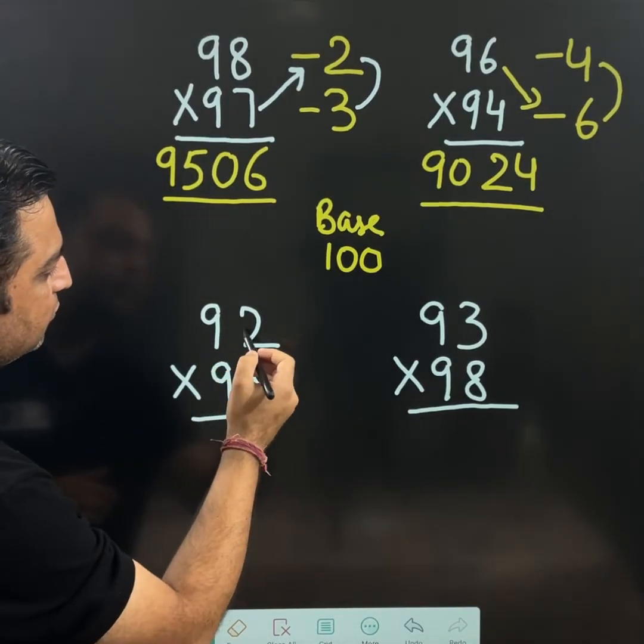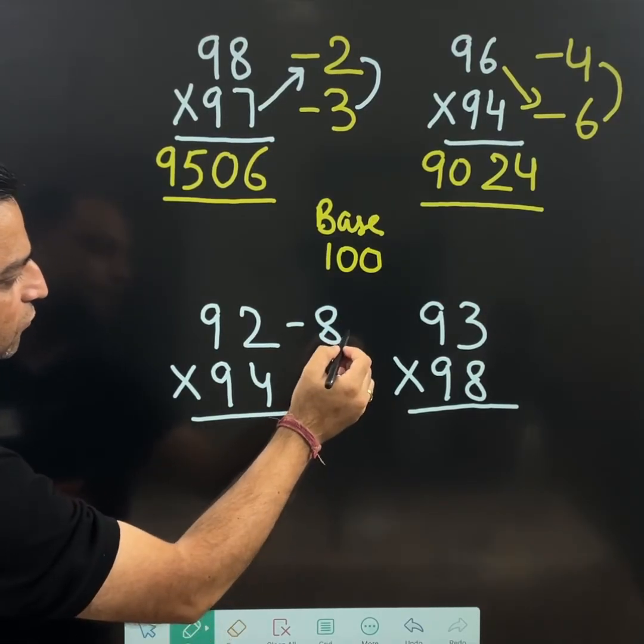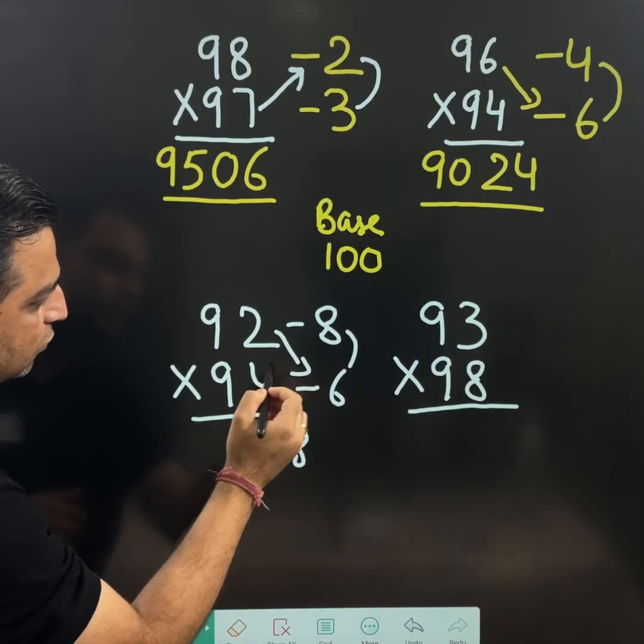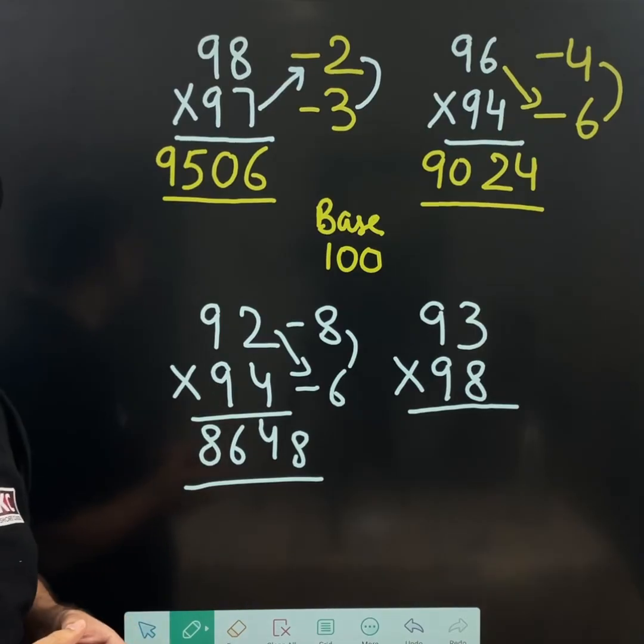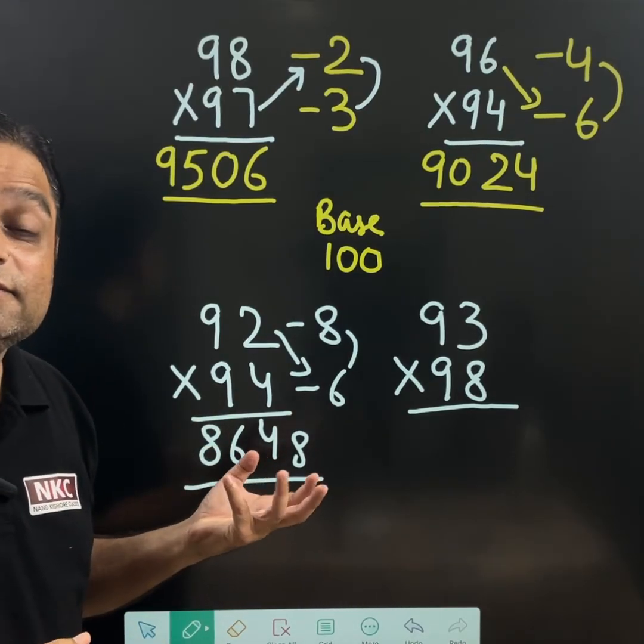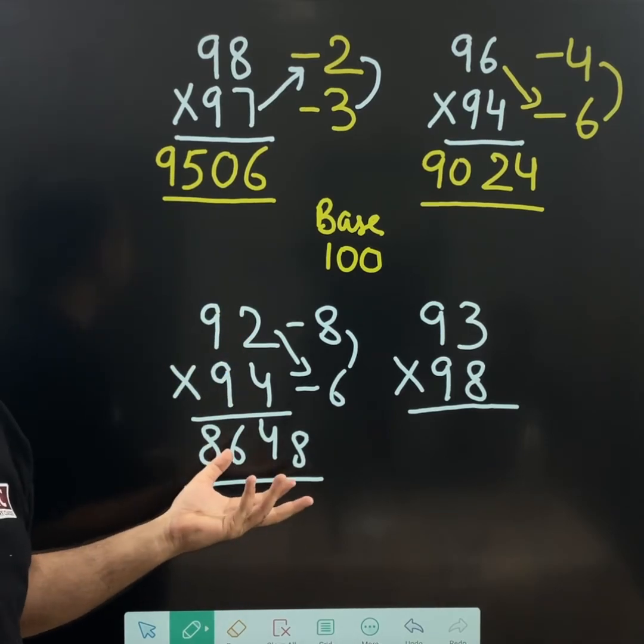See, 100 minus 8 gives 92. 100 minus 6 gives 94. 8 multiply 6 is 48. 92 minus 6 gives me 86. 8648 is the answer. How much time I took? Side by side I was speaking also. But still it takes very less time to do it.